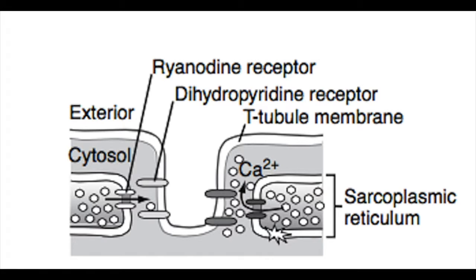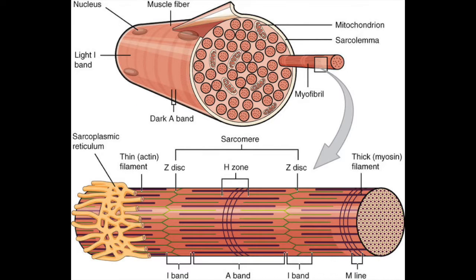When we discuss the process of how a contraction occurs, we'll talk about how these work together to cause an electrical impulse to create a muscle contraction. So on the membrane we have t-tubules with dihydropyridine receptors, and inside the cell very close to these are ryanodine receptors located on the sarcoplasmic reticulum, which is an intracellular calcium storage space.